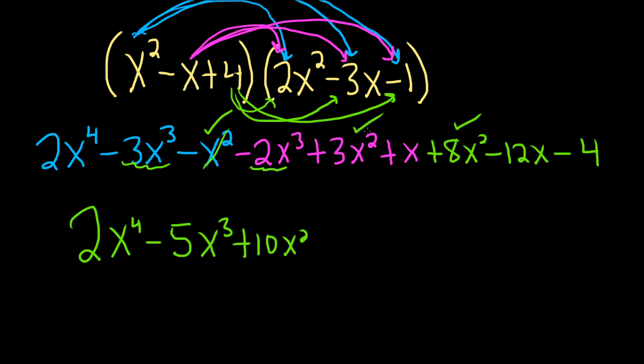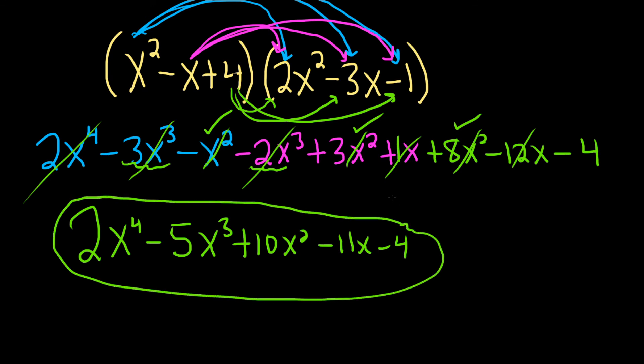Cross out the terms as you go through them. For the x terms: x minus 12x is minus 11x - you can think of it as 1x, so 1 minus 12 is minus 11. And then we're left with minus 4. That would be the final answer: 2x⁴ - 5x³ + 10x² - 11x - 4. I hope this video has been helpful.